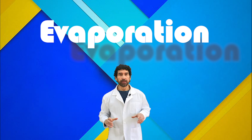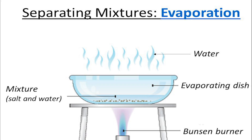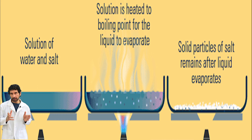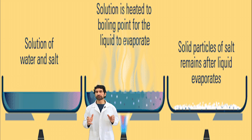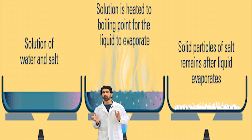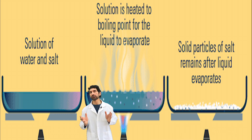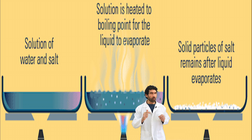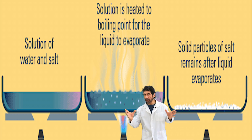Method 4: Evaporation. Evaporation is used to separate a soluble solid from a liquid. For example, salt is soluble in water — its crystals dissolve in water to form a solution. During evaporation, the water evaporates, leaving solid salt crystals behind.